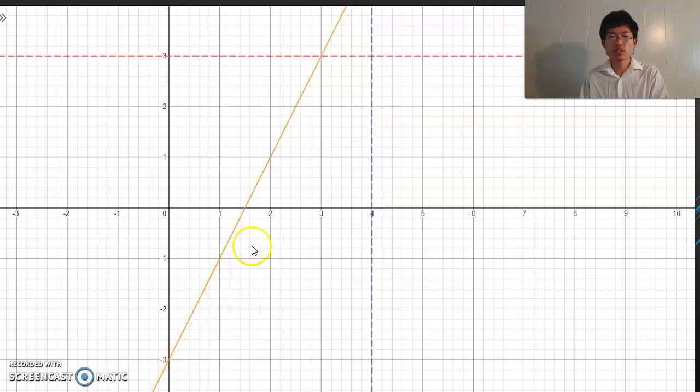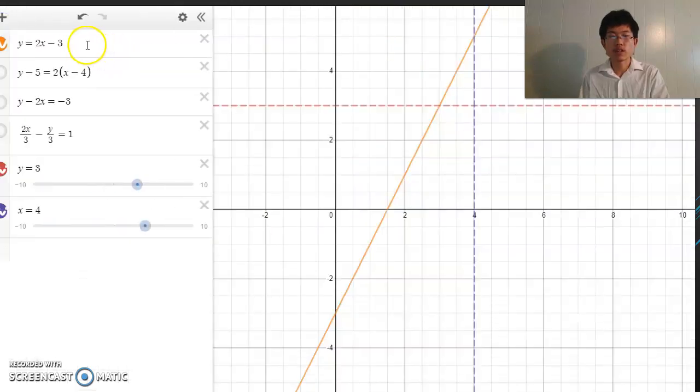Now let's look at this solid line. I already have an equation right here: y = 2x - 3. And that's the graph. Notice that 2 is the slope.